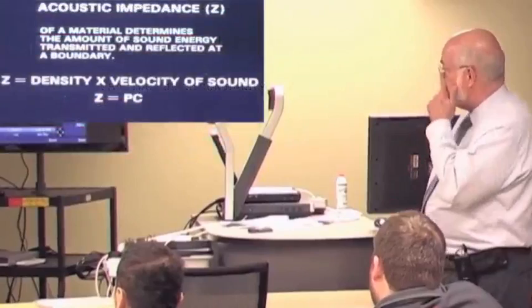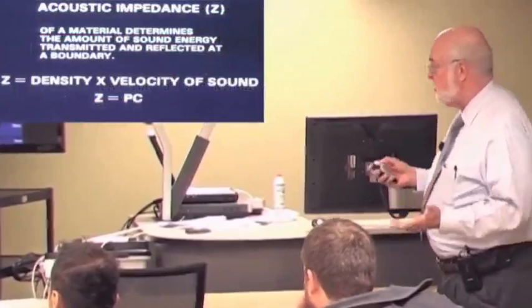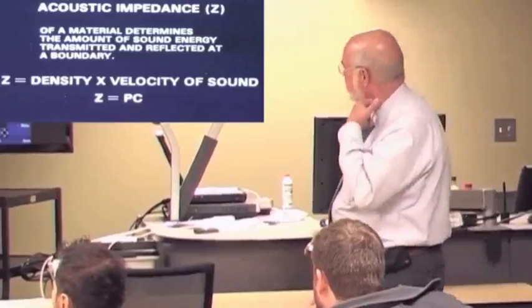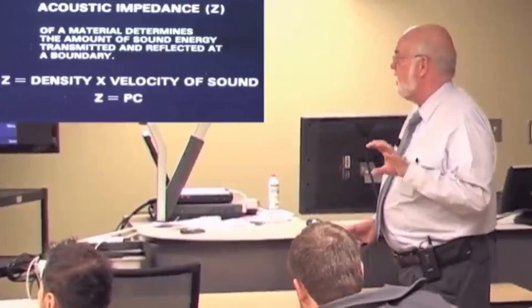The acoustic impedance of a material determines the amount of sound energy transmitted and reflected at a boundary between two things that have different density. The acoustic impedance is related to density as we think about density, but it has a different factor too. It's not just density, but also the rate of sound transmission in that medium.